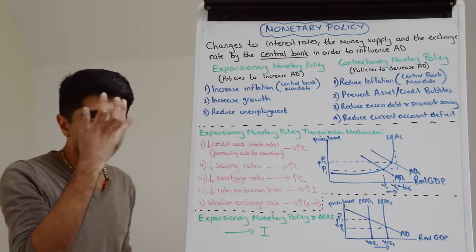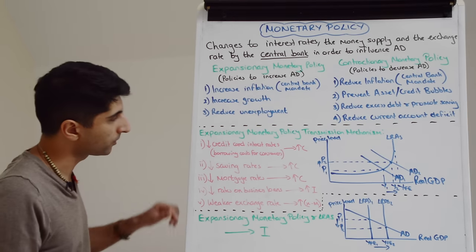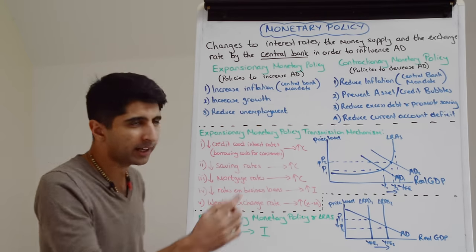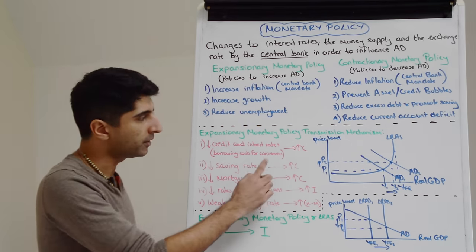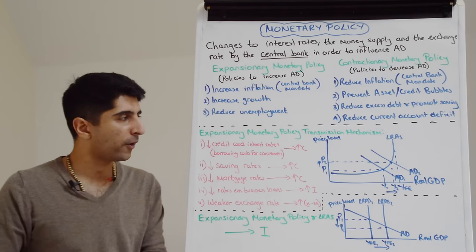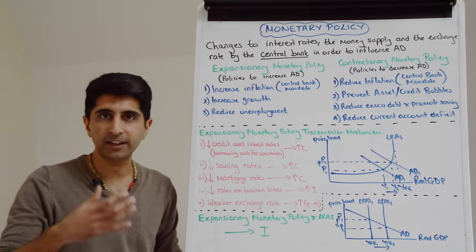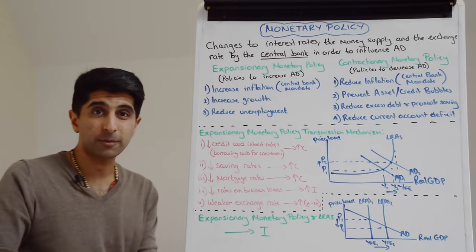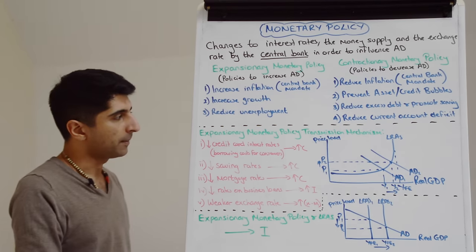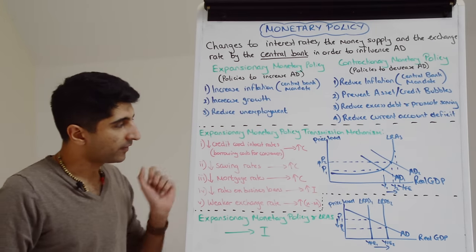The central bank cuts interest rates — that's the expansionary policy — and that could lead to lower credit card interest rates, basically lower borrowing costs for consumers. If it's cheaper for consumers to borrow, it incentivizes more borrowing and less saving. That's going to increase the marginal propensity to consume, as consumers will be spending more on big ticket items like cars, furniture, and jewelry. Therefore, aggregate demand will be boosted as consumption rises.